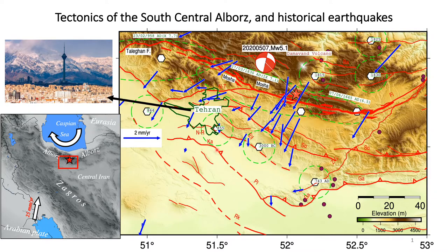Here is the region showing Damavand volcano, Mosha fault bolded in red, and Tehran city. Tehran is the capital of Iran with over 15 million population. It is one of the most hazardous capitals in the world because of the existence of several active faults shown in red, and also the volcano next to it.